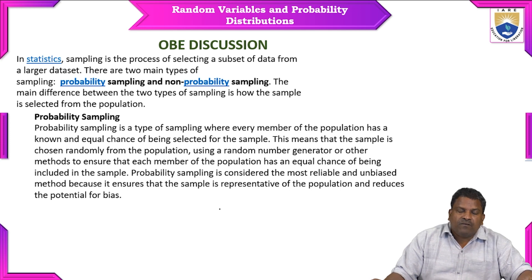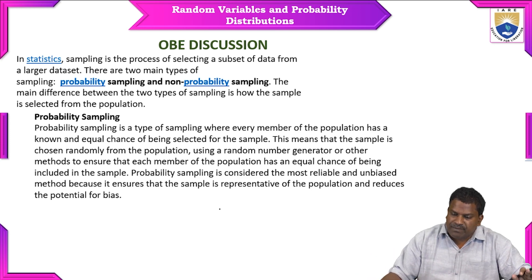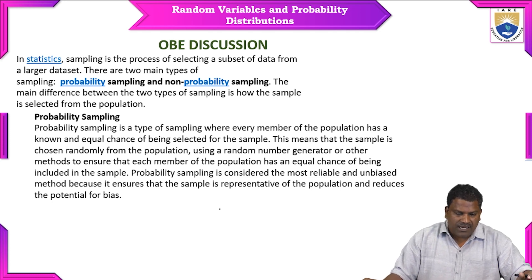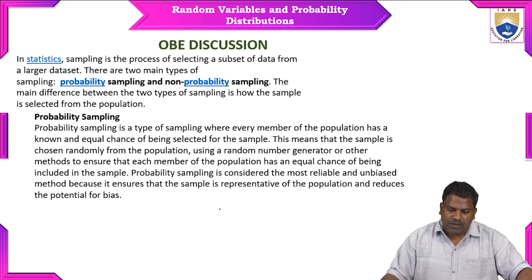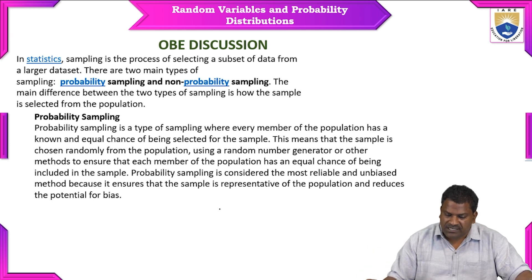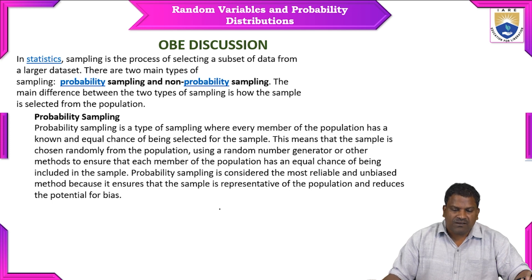There are two main types of sampling: probability sampling and non-probability sampling. The main difference between the two types is how the sample is selected from the population — that is very important here. Probability sampling is a type where every member of the population has a known and equal chance of being selected, using a random number generator or other methods, and it is considered the most reliable and unbiased method.